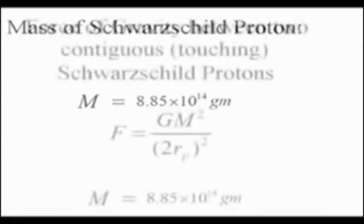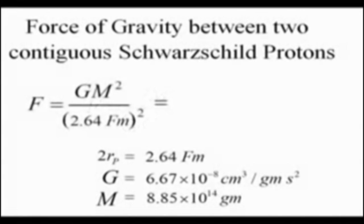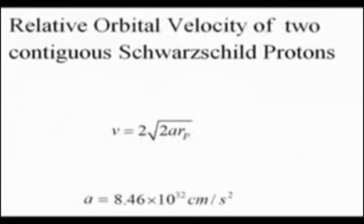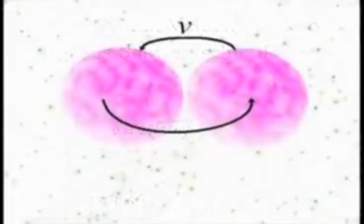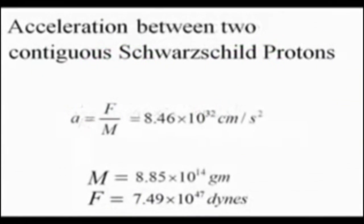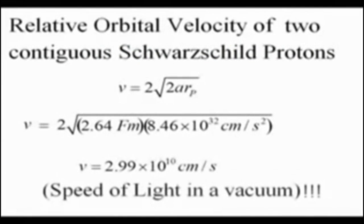Haramein then uses this mass to calculate the gravitational force between two contiguous Schwarzschild protons, using the semi-classical approach. We yield a gravitational force of 7.49 times 10 to the 47th dynes. If we then calculate the relativistic velocity of two Schwarzschild protons orbiting each other with their centers separated by one proton diameter, we get 2.99 times 10 to the 10th, which is also equal to the speed of light.